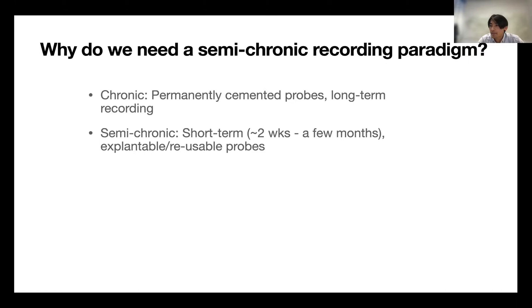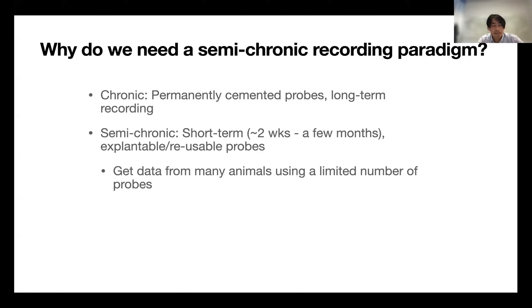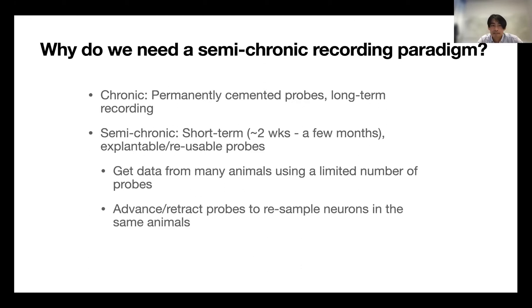Why might we want to do that? First, we sometimes want to get data from many animals using a limited number of probes. Second, there might be circumstances where we actually want to get more units out of a single animal, which requires us to advance or retract probes within the same animal.